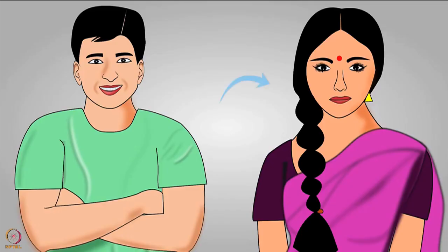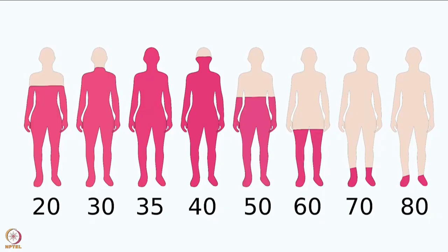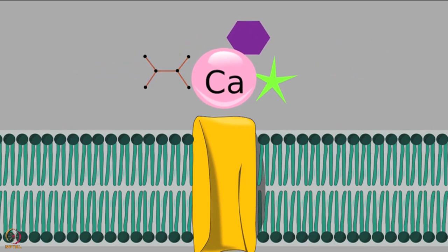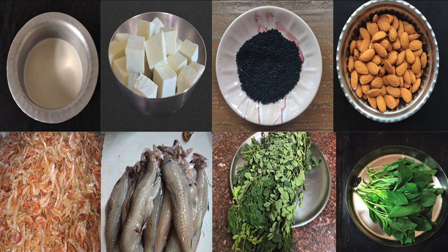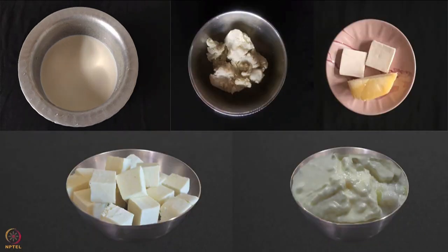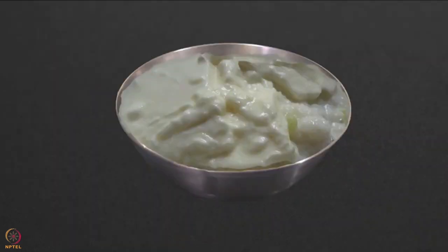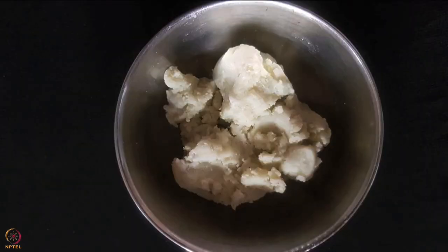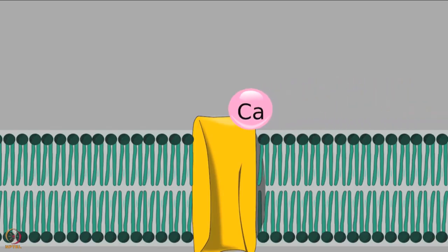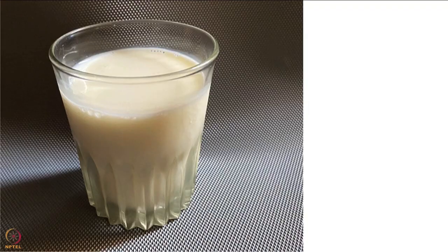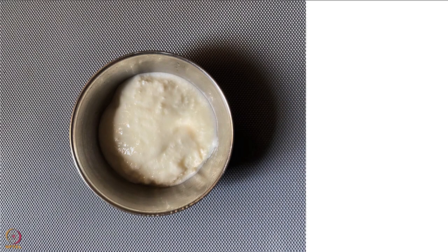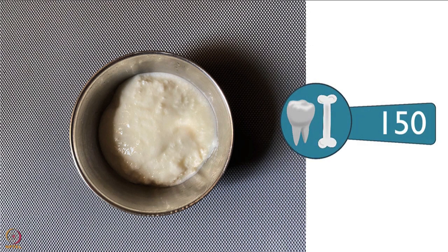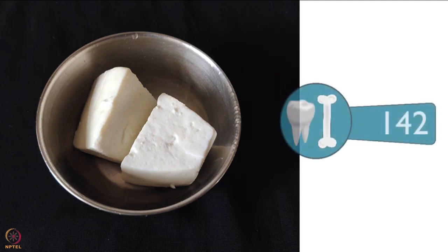The risk of osteoporosis is higher in women compared to men because estrogen levels decrease after menopause, reducing calcium absorption and increasing its excretion through urine. To avoid calcium deficiency, adequate intake of calcium-rich food is essential. The best sources are milk and milk products including curd, paneer, cheese, and khoya. Calcium from these sources is easily absorbed — 200 ml of cow's milk provides 236 mg of calcium.